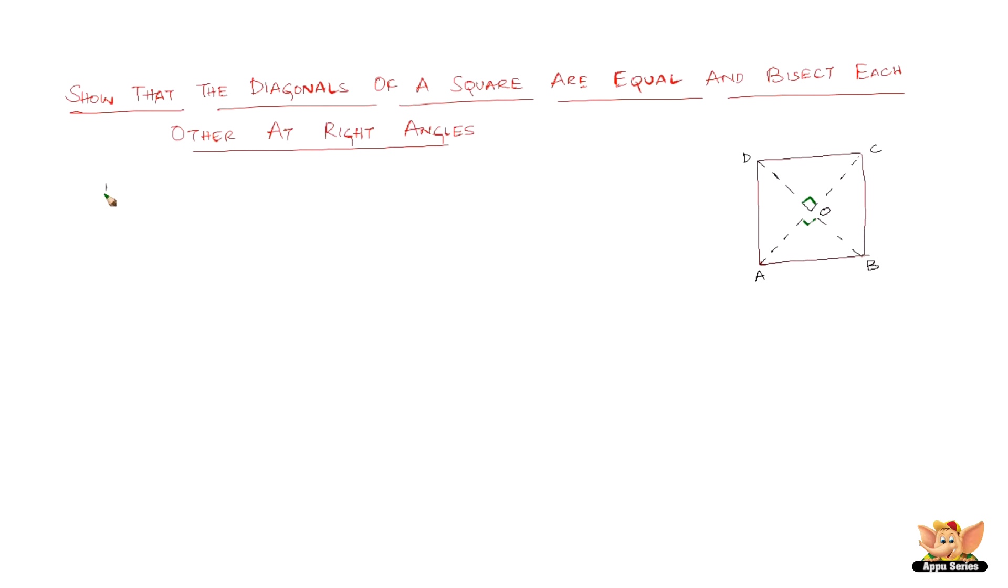Now in triangles BAD and in triangles CDA we have BA equals CD because it is a square and the square has all the four sides equal. And then we also have angle BAD equals angle CDA because we know that the four angles of a square are each equal to 90 degrees. And then we have AD equal to DA because they both share the common side or the same side for both triangles.